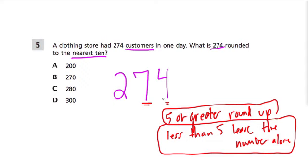So because 4 is less than 5, we leave 7 where it is. Now the next step is to get rid of the unit place value right here or the ones place because we're really focused on this one right here.